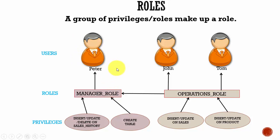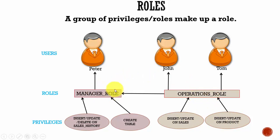One more thing: not only privileges can be combined into a role, you can also include another role into a role. The operations_role is made up of insert and update on sales, and insert and update on product. Now, this operations_role is given to the manager_role. That means the manager_role has all four of those privileges. So Peter, who has the manager_role, has all four privileges, while John and Tom, who have the operations_role, have those two privileges.